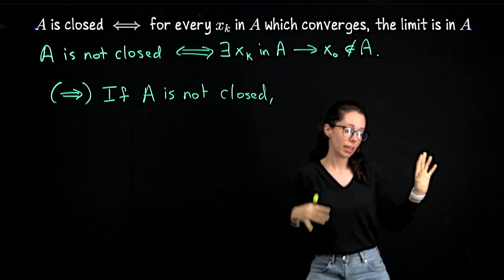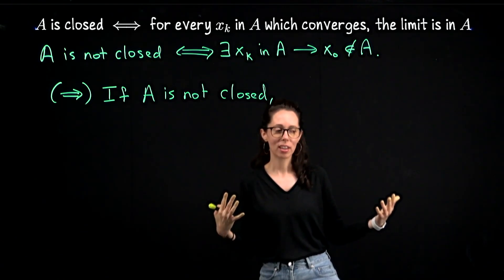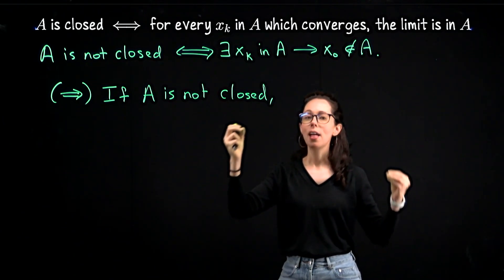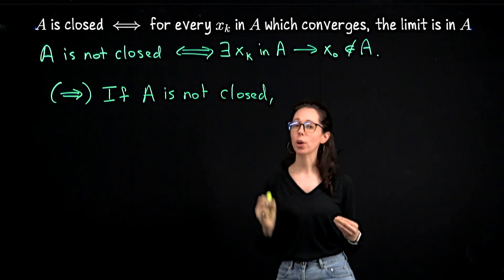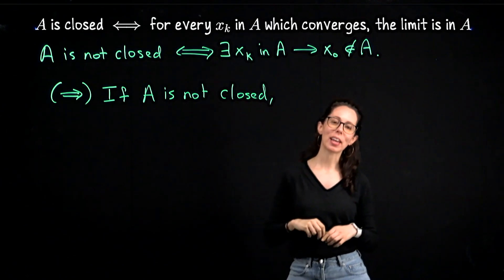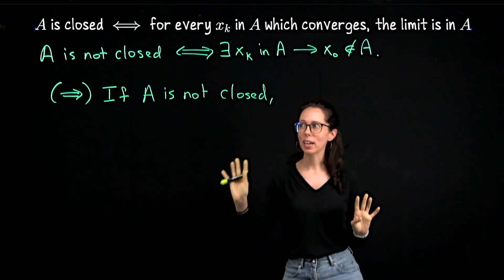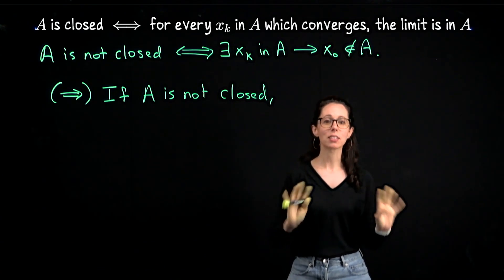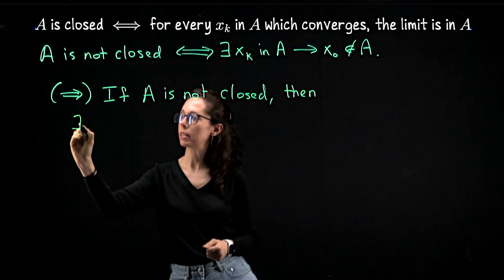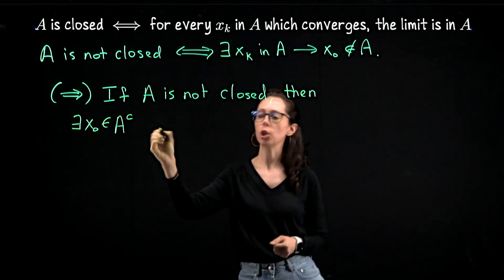Contrast that with if I stayed with A, I don't know if A even has any accumulation points. For example, the set of integers doesn't have any accumulation points. But by saying I'm working with a set which is not closed, there exists an accumulation point. I can actually grab one and I know it lives in the complement. So that's why I wanted to switch. Second remark I'll make before I continue this, careful not to write if A is open. Not closed is not the same thing as open.